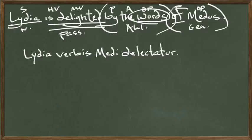She delights is delectat — that's where we get the English word 'delectable.' To make it passive, we just add -ur: delectatur. So: Lydia verbis Medi delectatur. This sentence shows how concise Latin is — eight words in English become four words in Latin: Lydia verbis Medi delectatur.